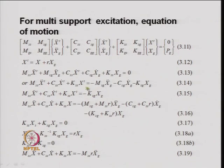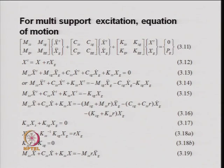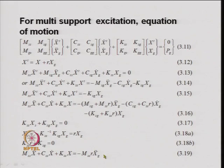On the right-hand side, we have minus K_sg into x_g, where K_sg is the coupling matrix between the support degrees of freedom and the ground degrees of freedom — that is, the coupling between the non-support degrees of freedom and the support degrees of freedom at the ground. And x_g is the ground displacement vector.